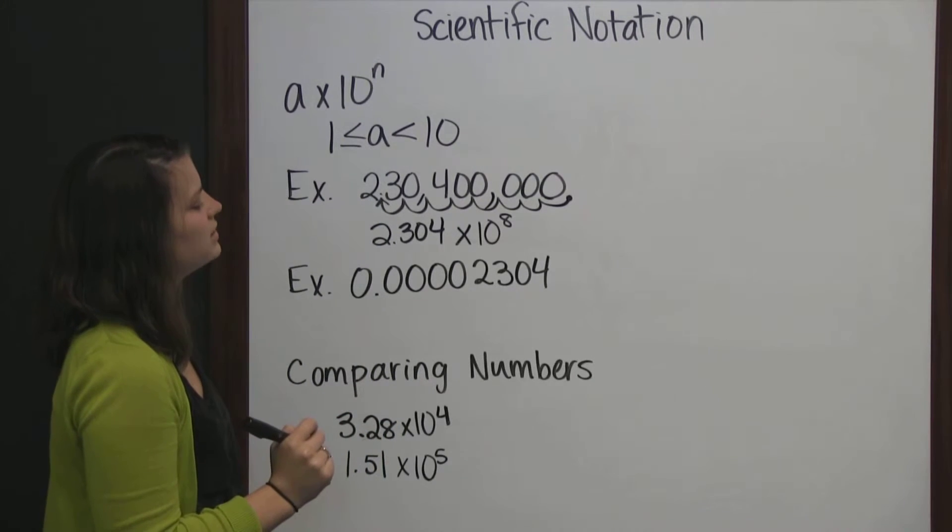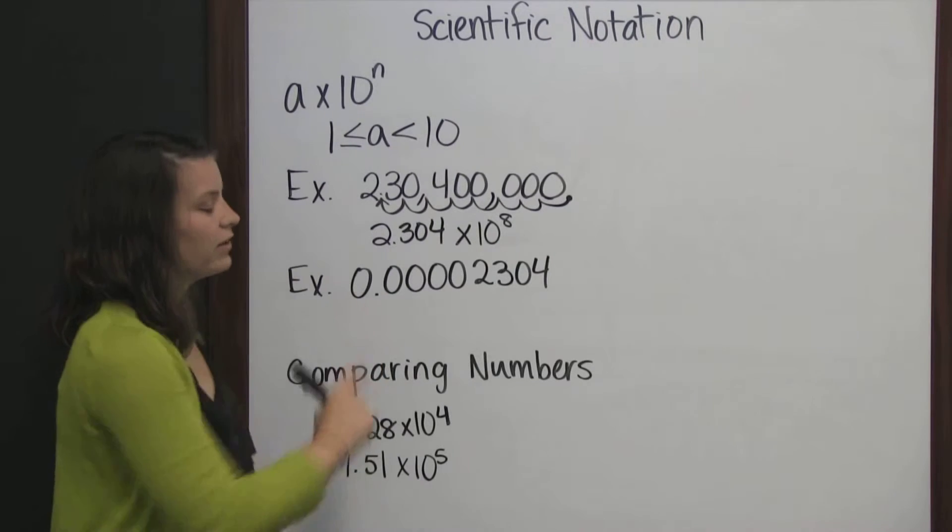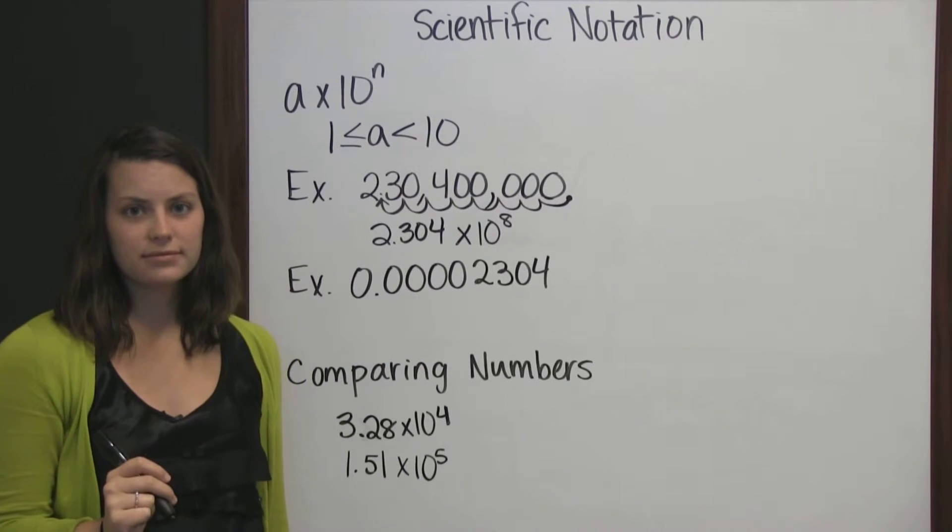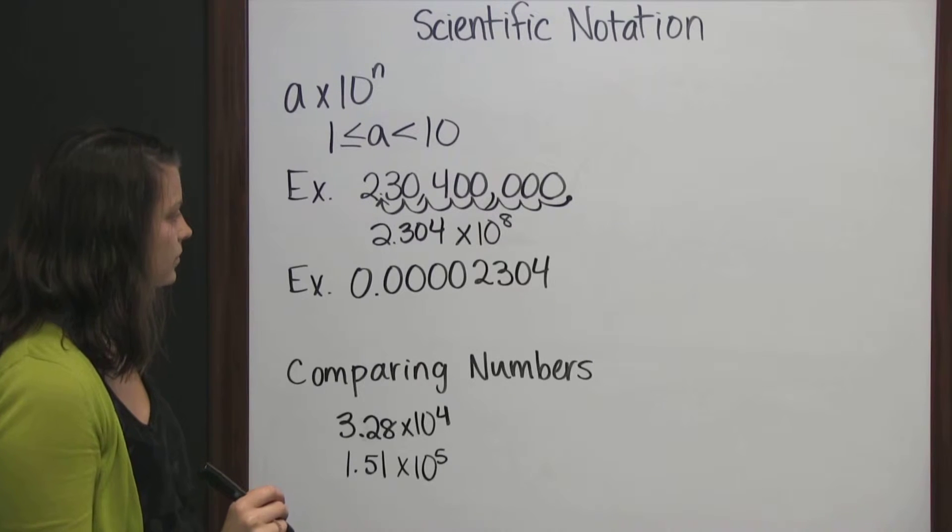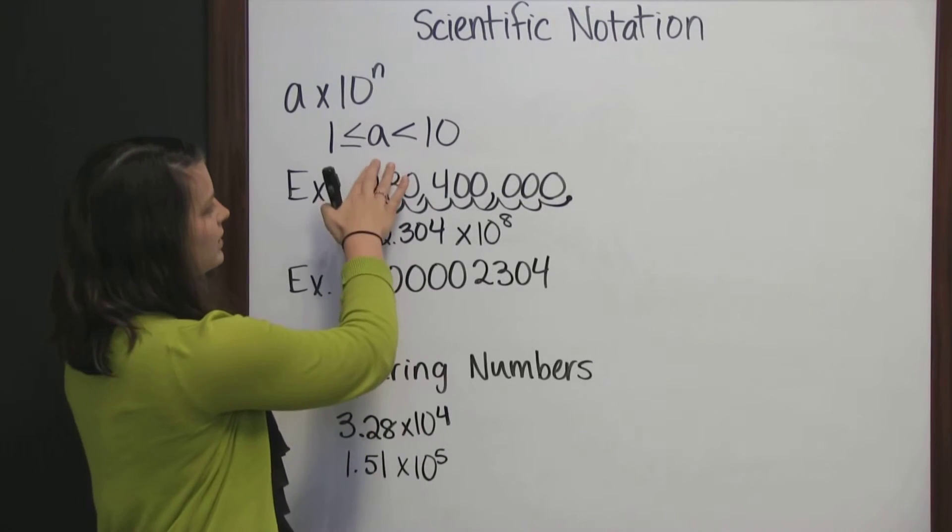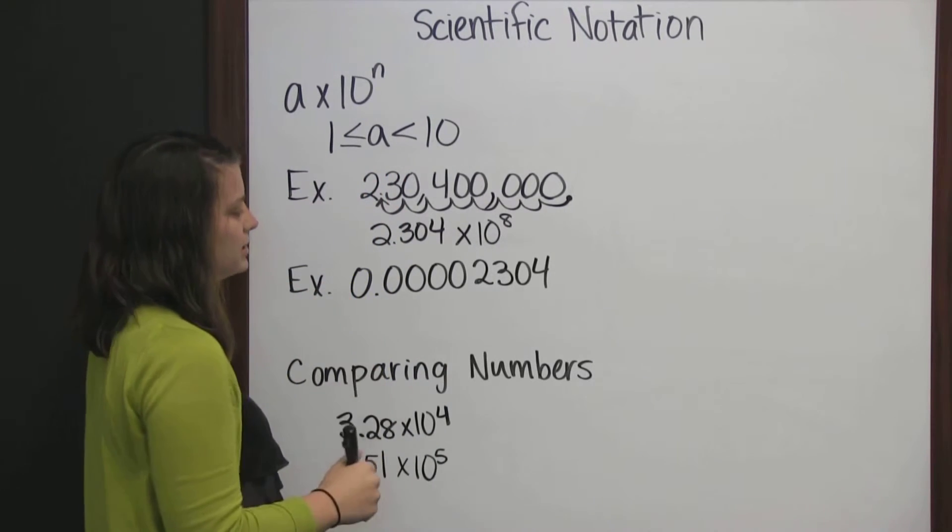We can also use scientific notation to take very large decimal numbers and write them in a shorter form. We do the same thing. Our a has to be greater than or equal to 1 and less than 10.